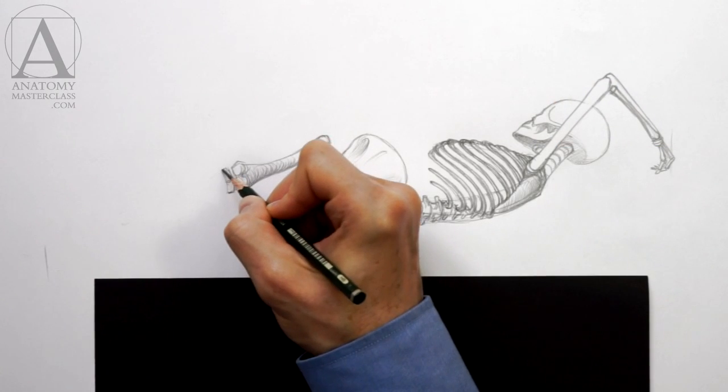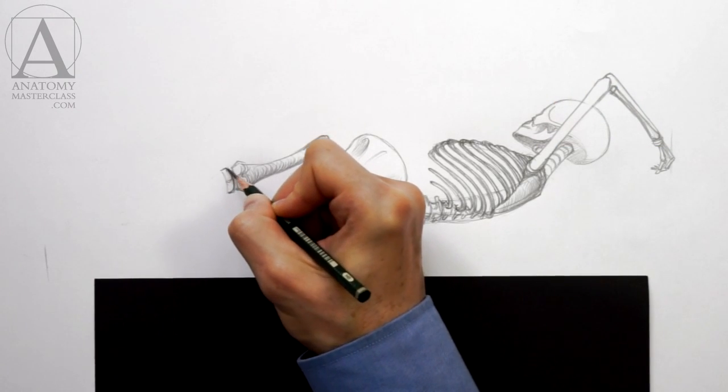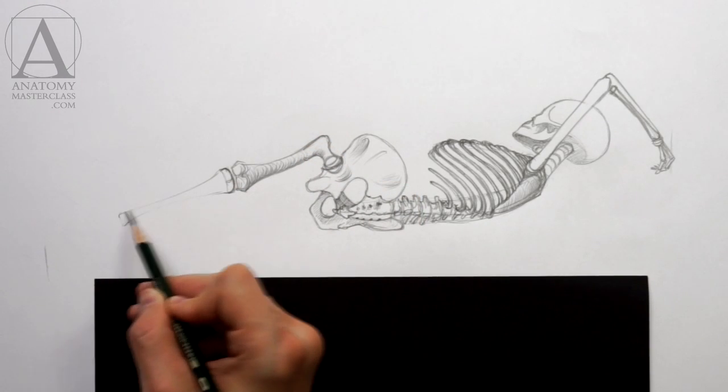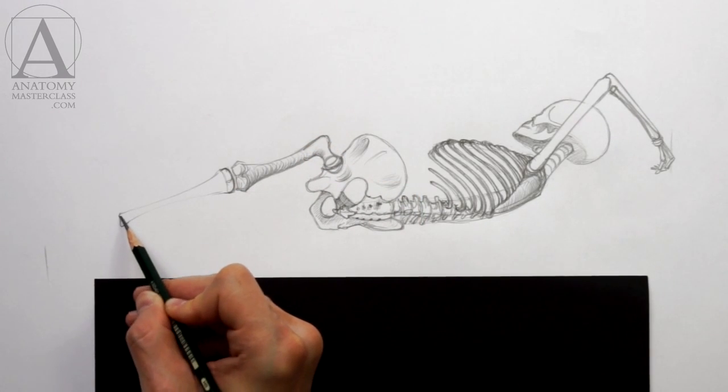The larger bone of the lower leg is the shin bone. The upper edge of this bone is also part of the knee joint. The lower edge of the shin bone is part of the ankle joint.